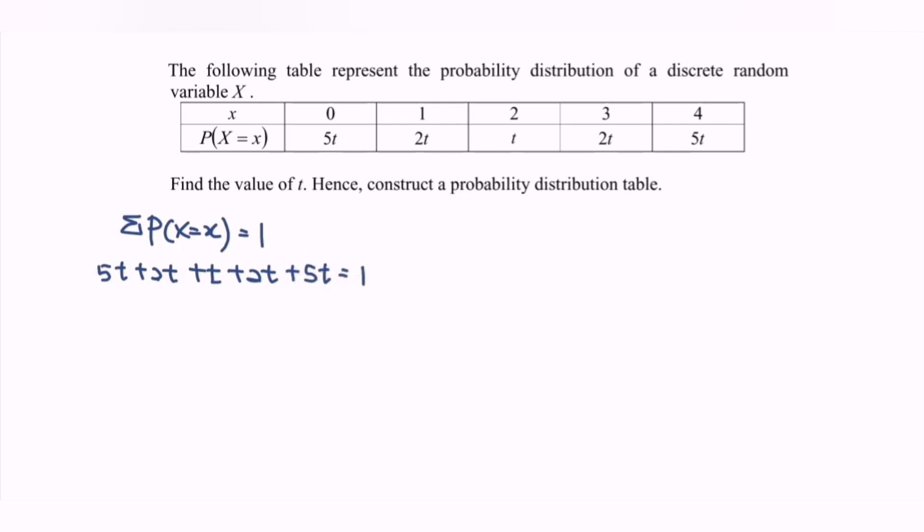Focus on the left-hand side and sum up the situation where we will have 15t equals 1. Rearranging the equation, t will be equal to 1 over 15.